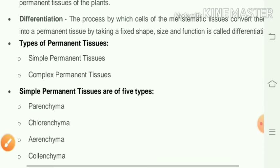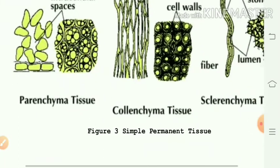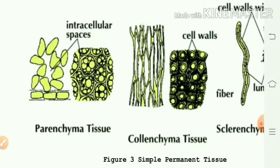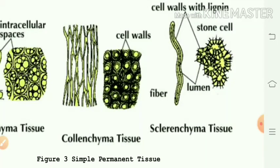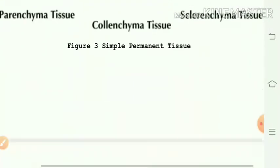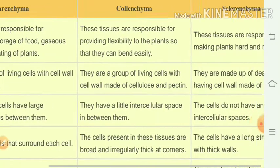Simple tissues are of three types: parenchyma, collenchyma, and sclerenchyma. Parenchyma cells are thin-walled and have intercellular spaces. Collenchyma cells have little intercellular space — they become rigid by depositing chemical substances. Sclerenchyma has the whole intercellular space made rigid due to deposition of lignin.